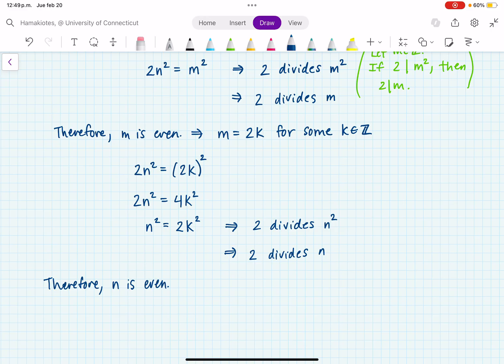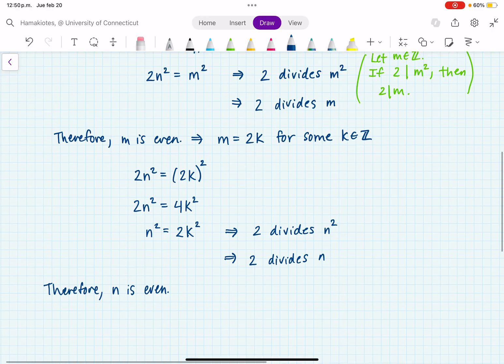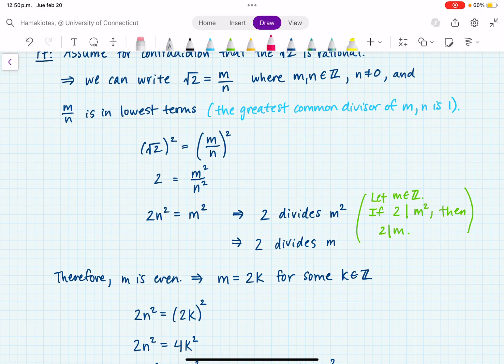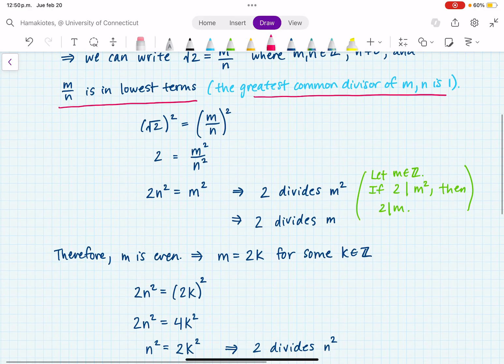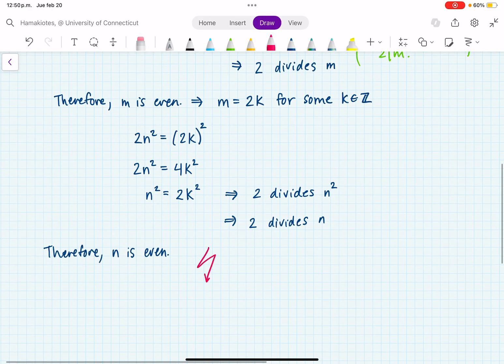Now let's pause. So we have that m is even, which means m is divisible by 2, and we have that n is even, which means n is divisible by 2. However, one of our assumptions was that m over n is in lowest terms, which means that the GCD of m and n is 1. This tells me that the GCD of m and n is at least 2.